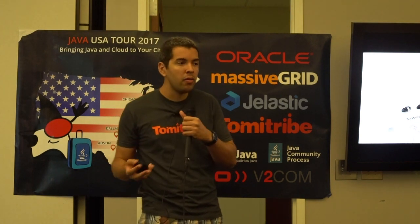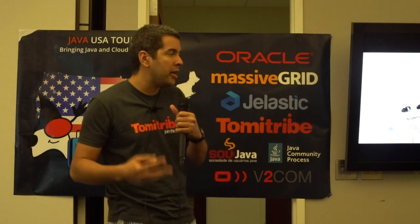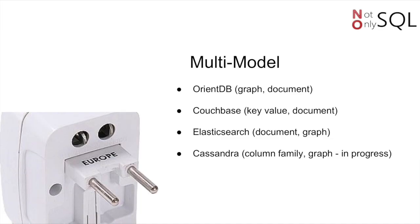And I have the last type: multi-model. Multi-model means one NoSQL provider supports more than one model type. For example, ArangoDB supports graph and document. Couchbase supports key-value and document. So if a database supports more than one model type, it's a multi-model.